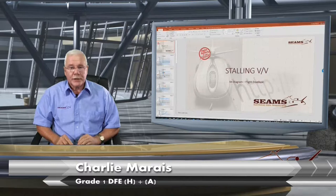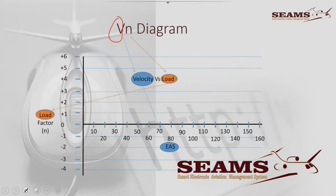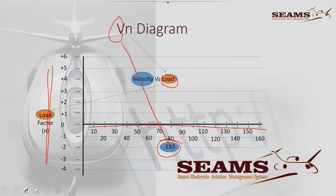Now we can tackle the problem of the VN diagram. The V velocity, you can see, goes about the equivalent airspeed squared, which is on this line here. And the load factor is plotted on the side. So if we can play these two off during this presentation, then we should be able to construct a flight envelope.